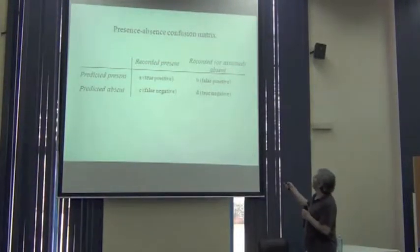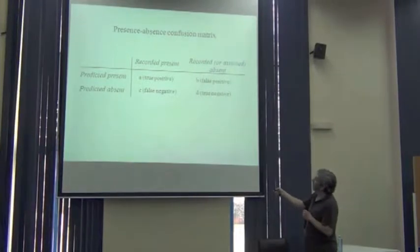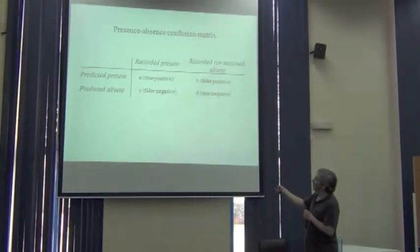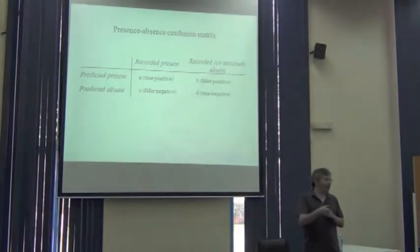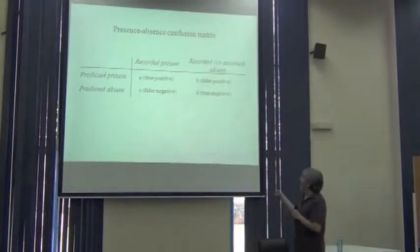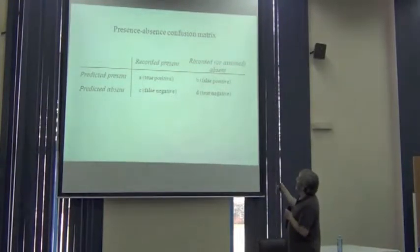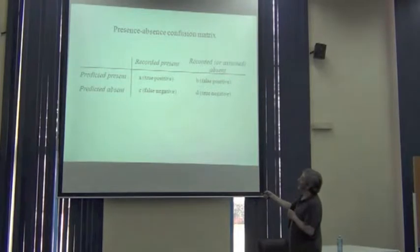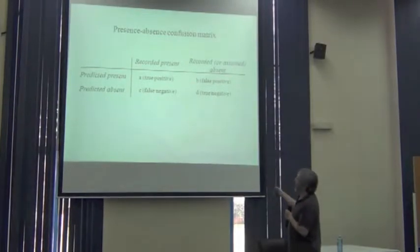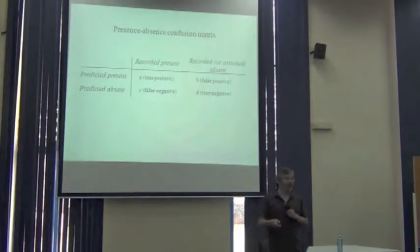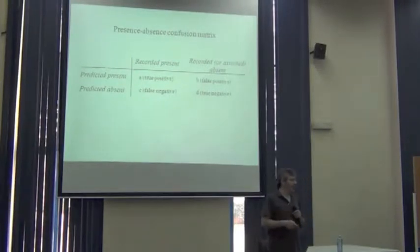If I take a presence and predict it as absence, that's a false negative or an omission error. If I take an absence and predict it as presence, that is a false positive or a commission error.